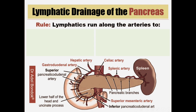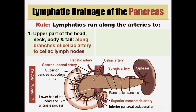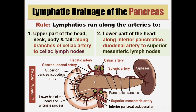Regarding lymph drainage of the pancreas — again, lymphatics run along the arteries. The upper part of the head, neck, body, and tail follow branches of the celiac artery to the celiac lymph nodes. The lower part of the head and the uncinate process have lymphatics that follow the inferior pancreaticoduodenal artery to the superior mesenteric lymph nodes. So the pancreas drains into both celiac and superior mesenteric lymph nodes.